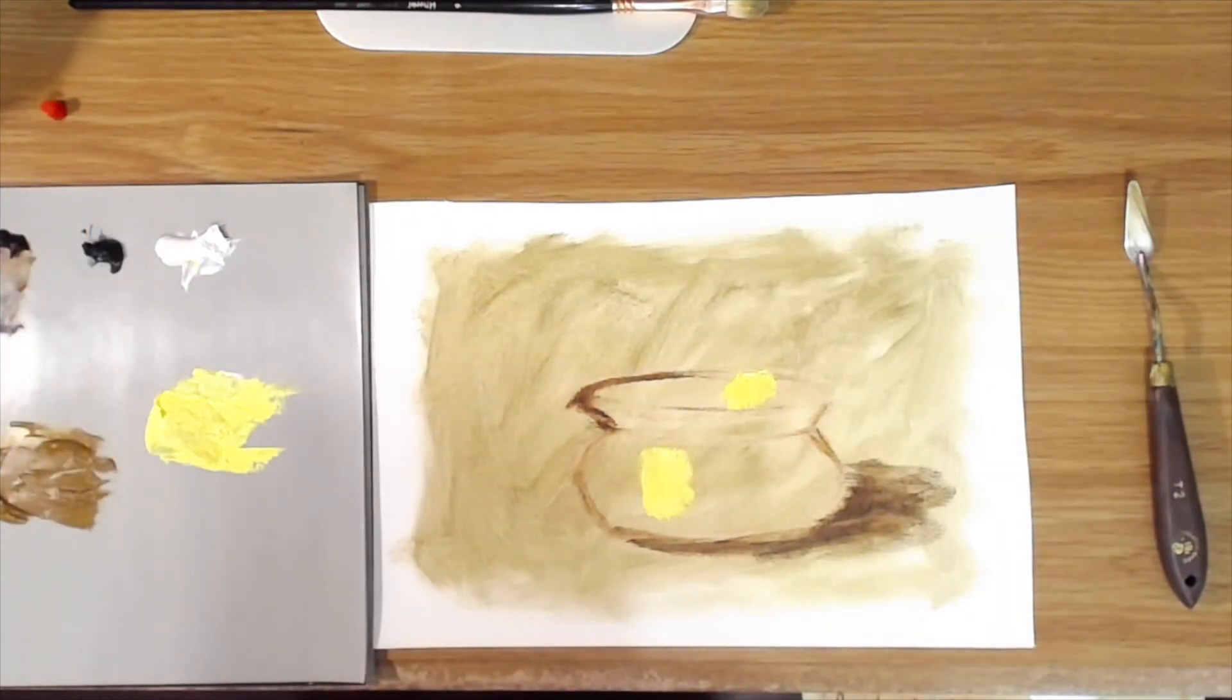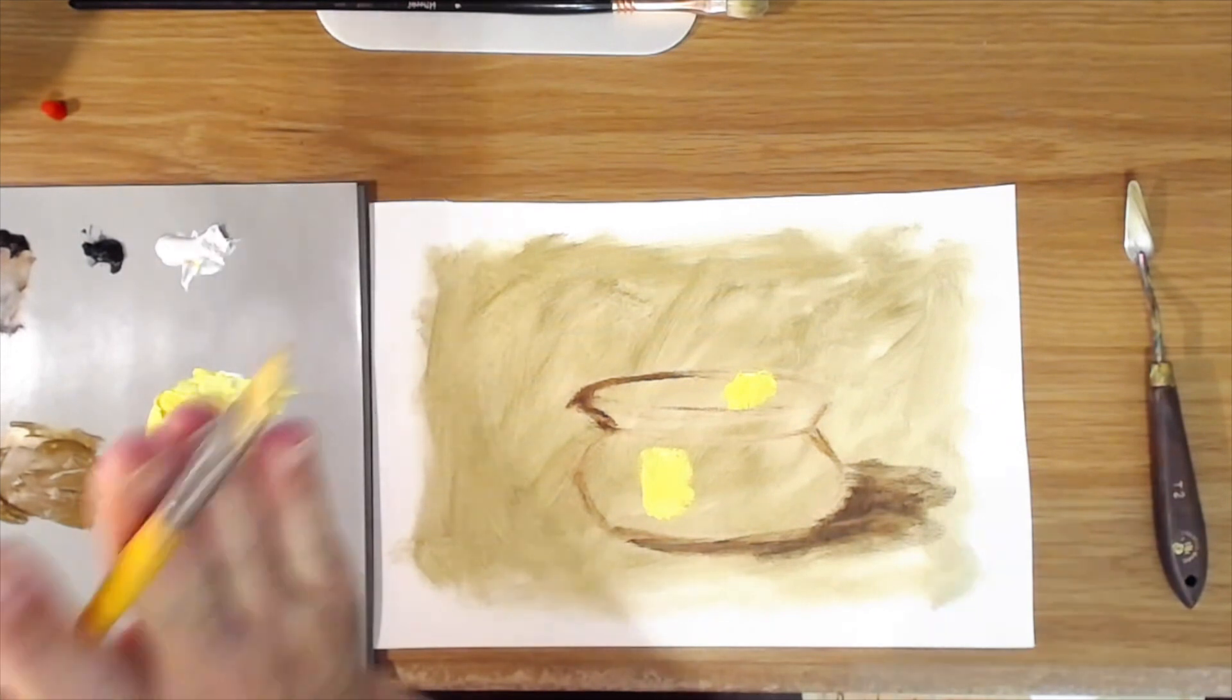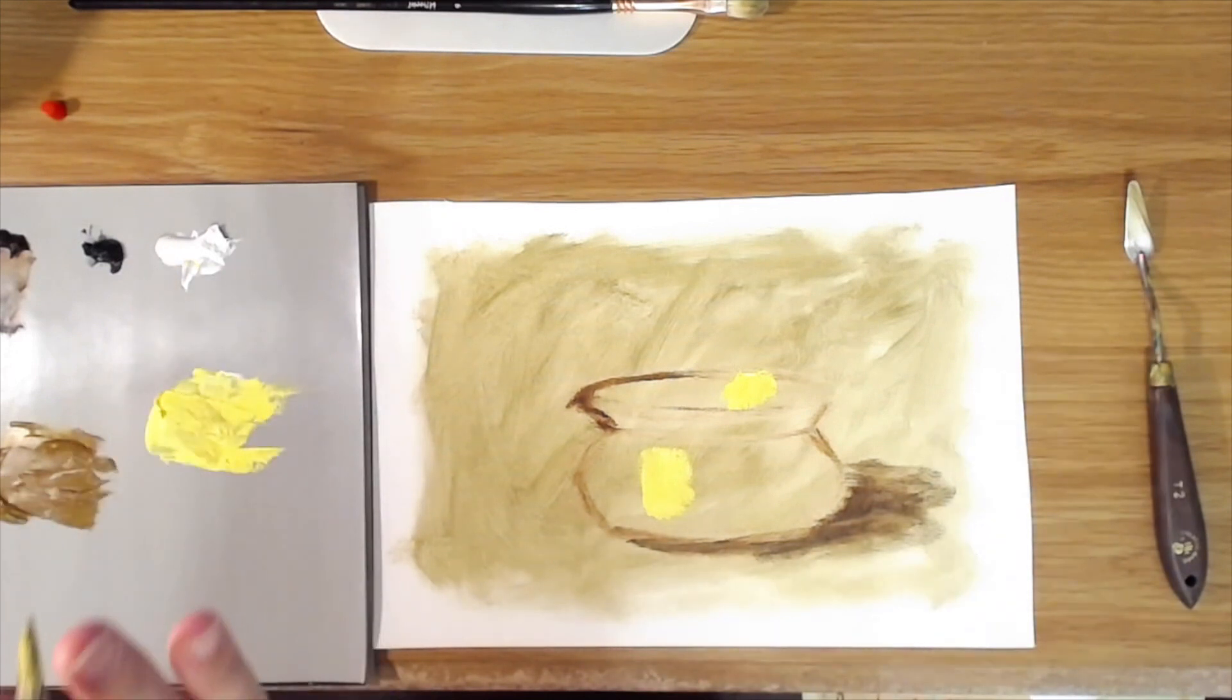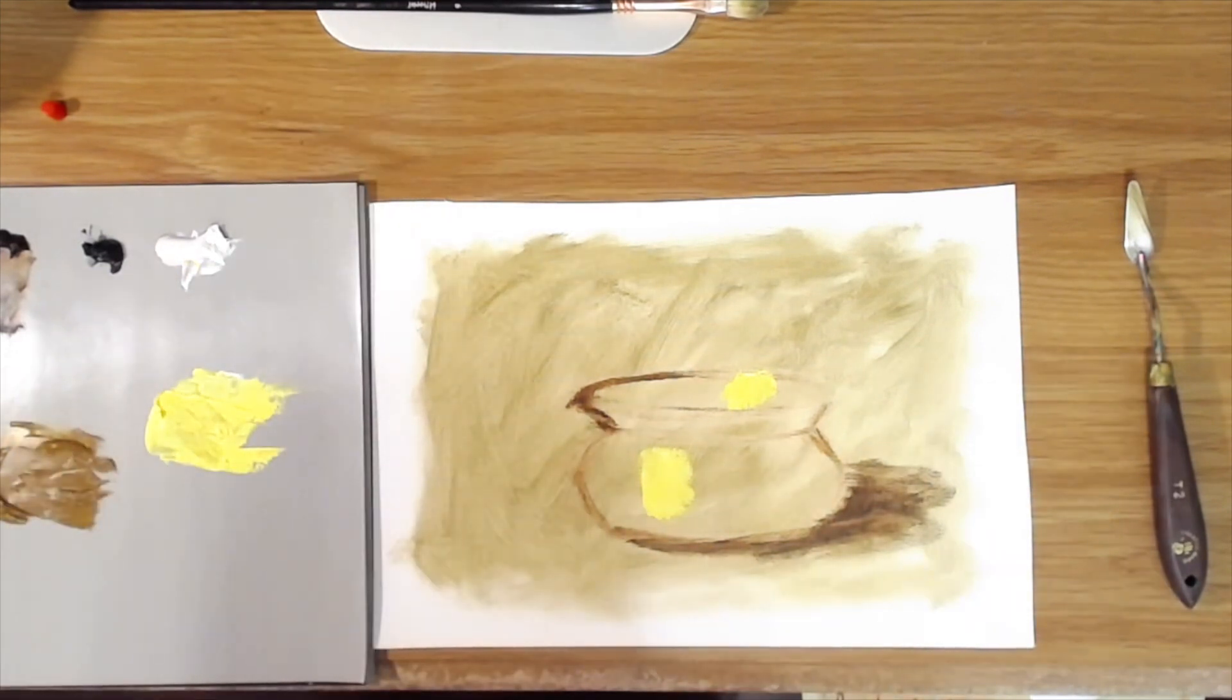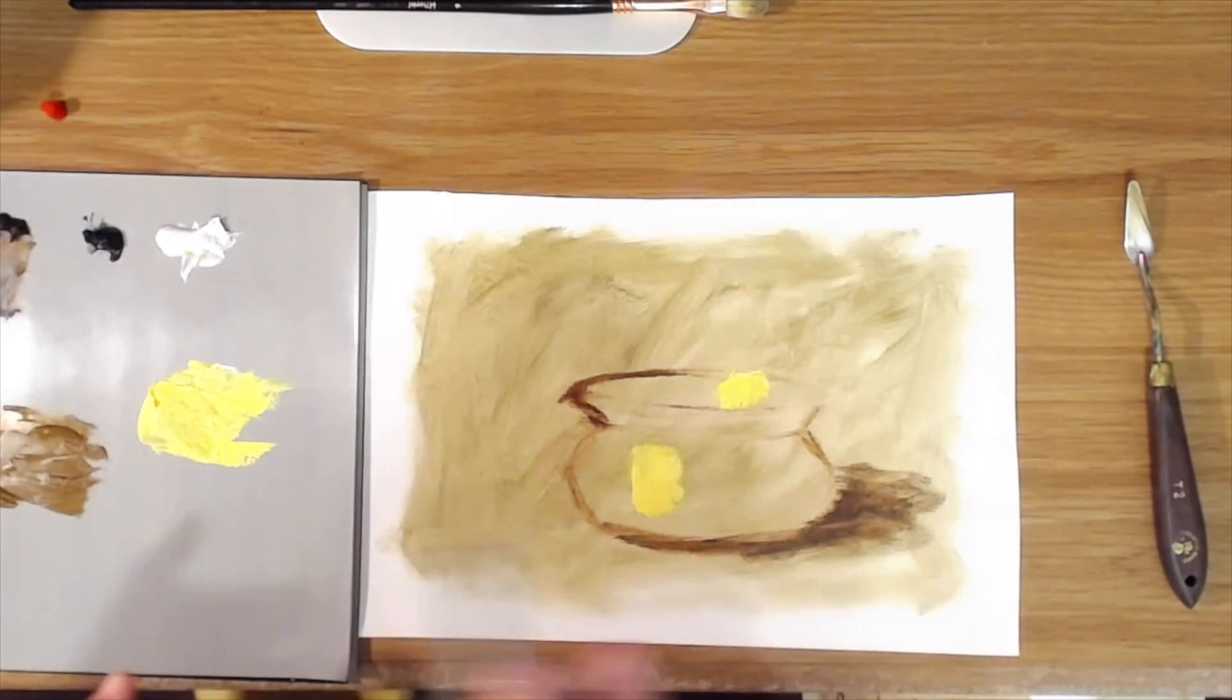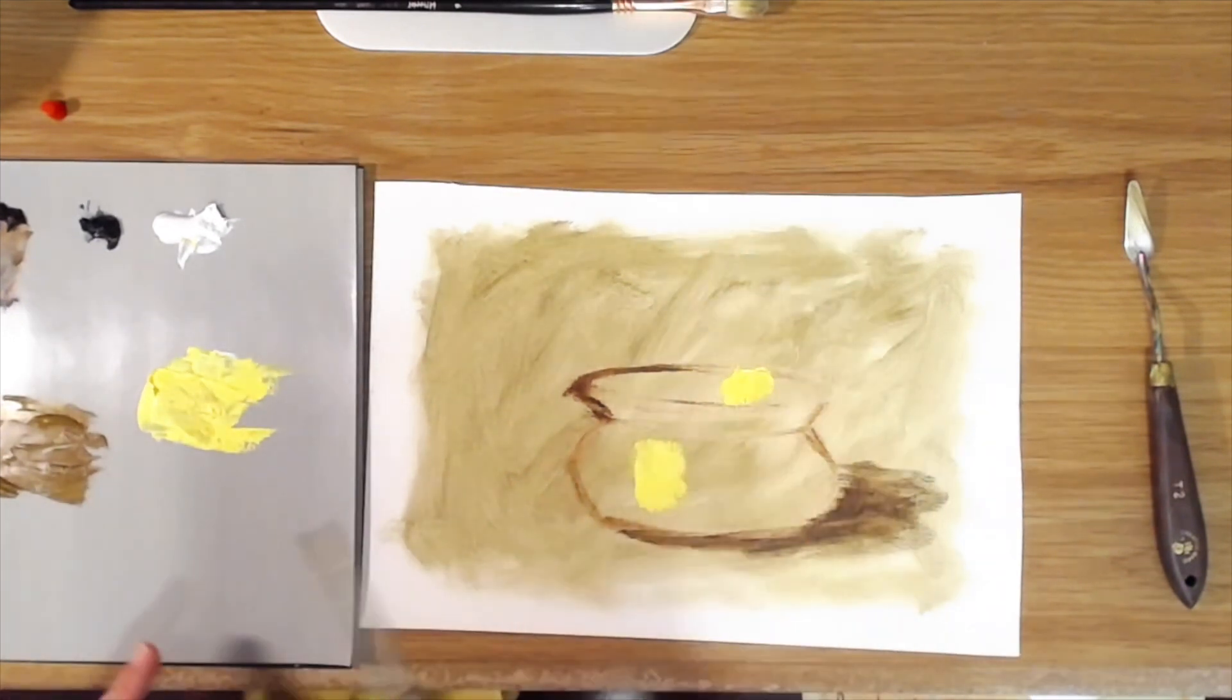It's really helpful if you want to paint metal to really look at the object and pay attention to the colors and the light and dark shapes that you see, because that will help you not make that mistake of just painting it in too light yellow.